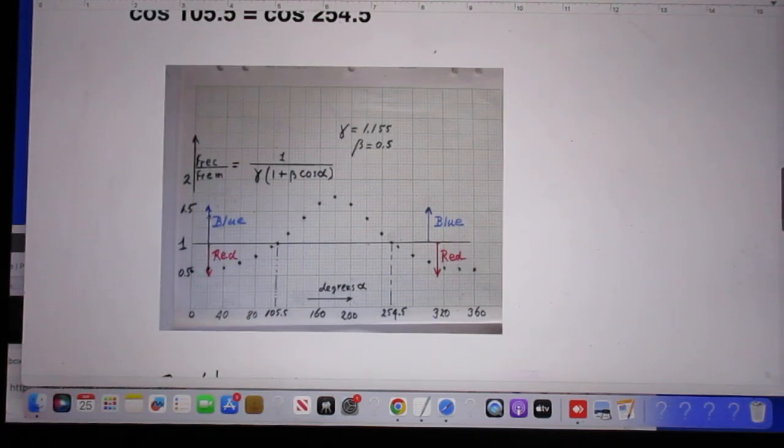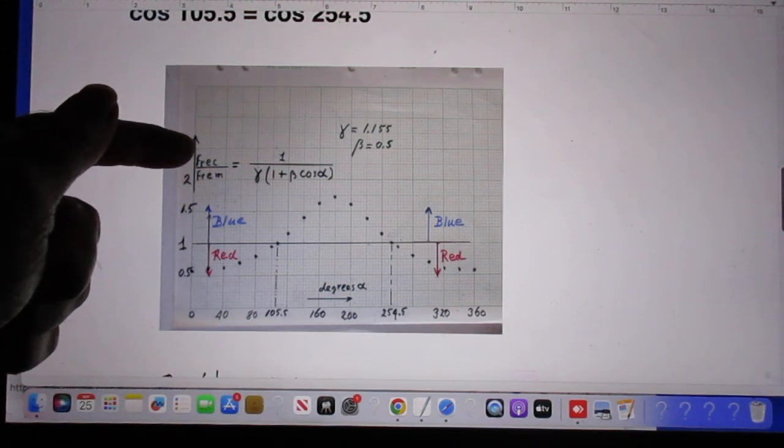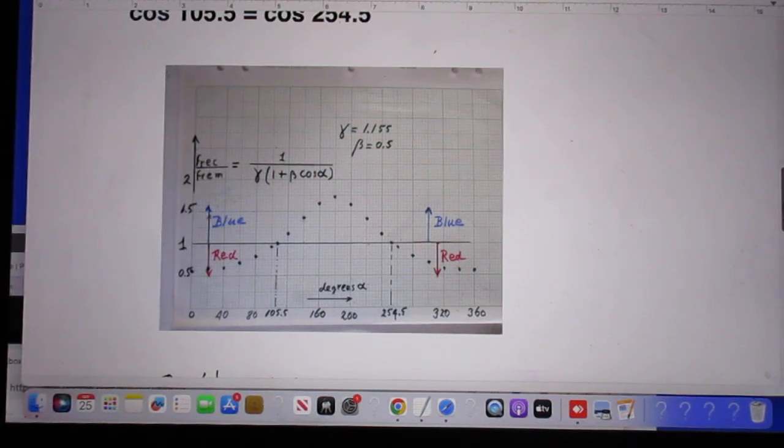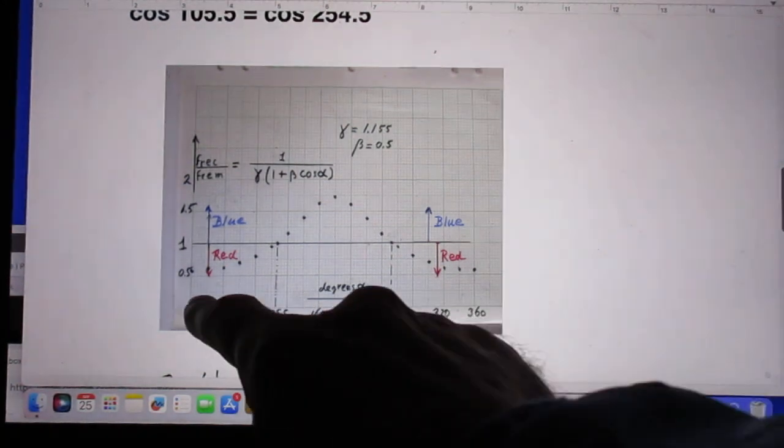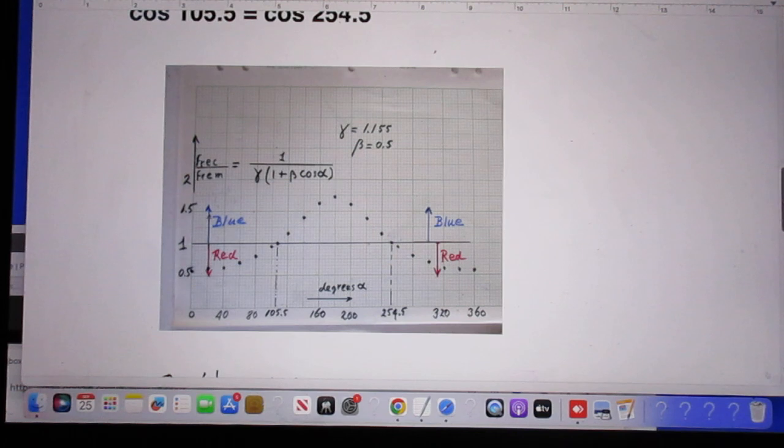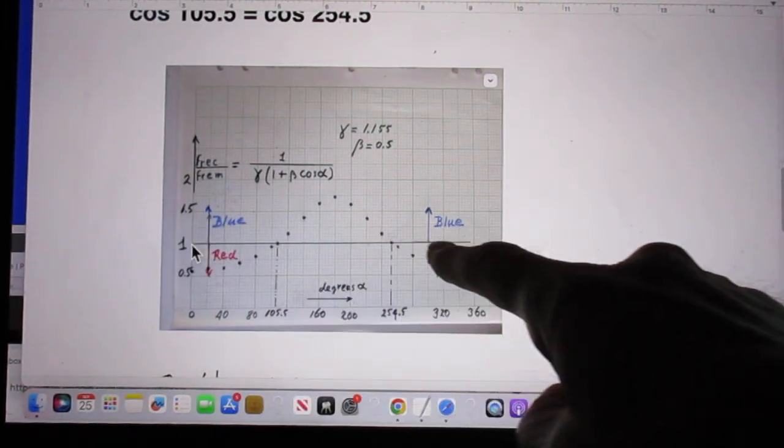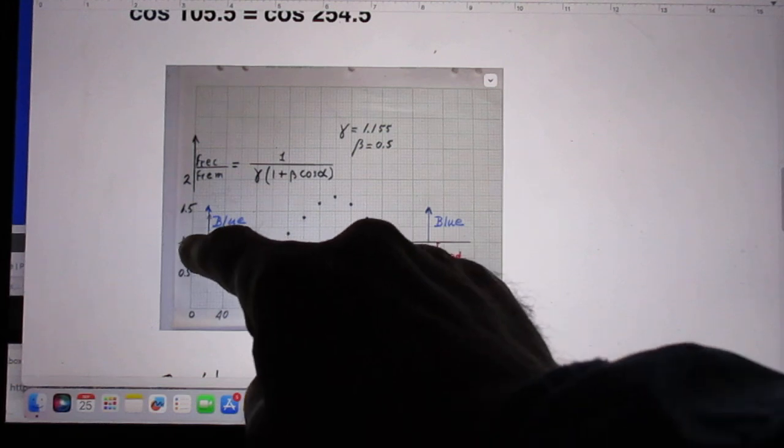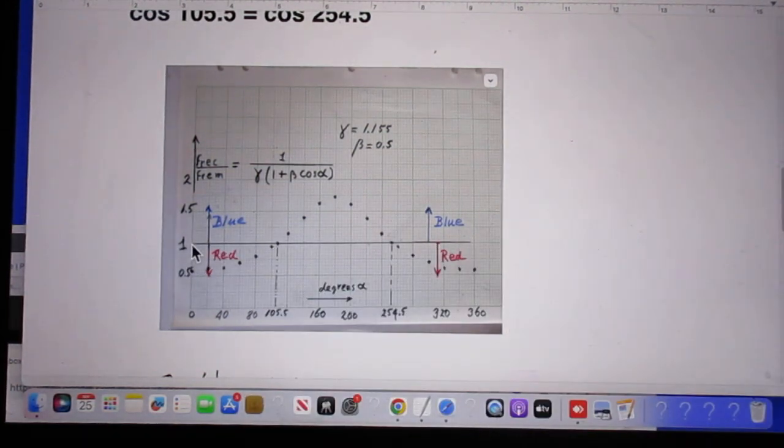I have plotted here the ratio frequency received divided by frequency emitted, and I have done that as a function of alpha. It's a very interesting plot. If the value is larger than 1, then we have blueshift. So everything above this line means blueshift. Everything below the line will be redshift. And you see here the 105.5 degrees and you see here the 254.5 degrees.